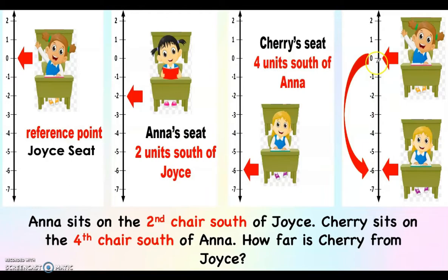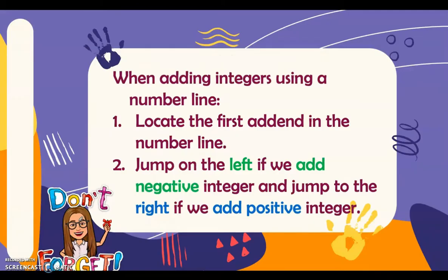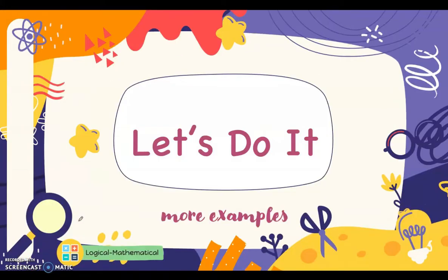Now, how do you add integers using a number line? When adding integers using a number line, first locate the first addend on the number line. Then jump to the right if we add a positive integer, and jump to the left if we add a negative integer.